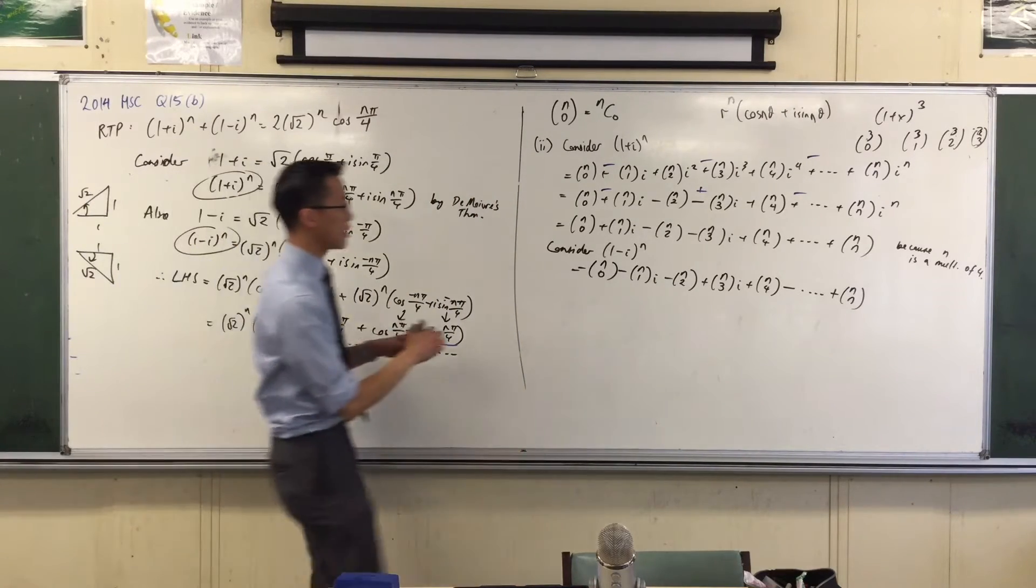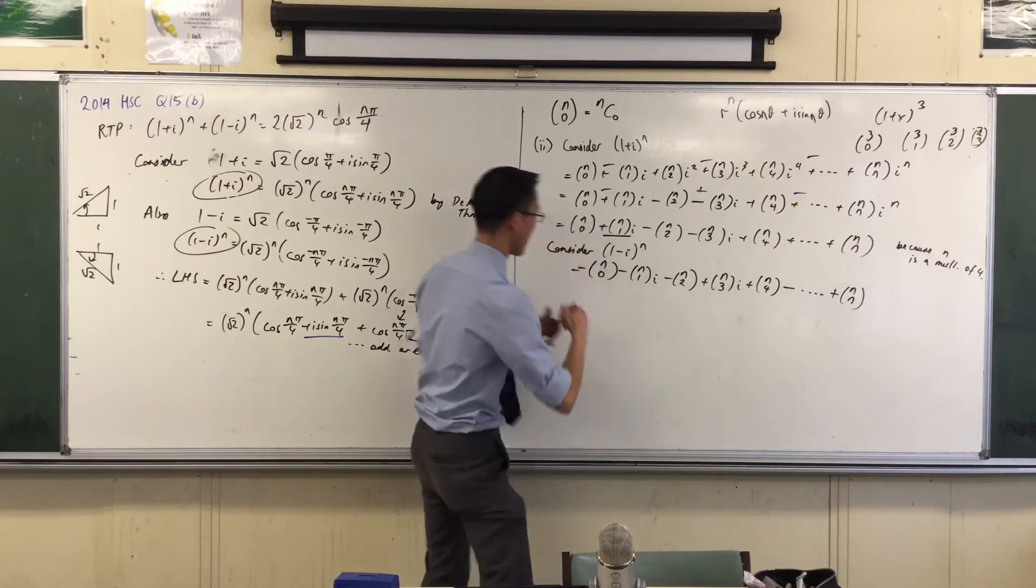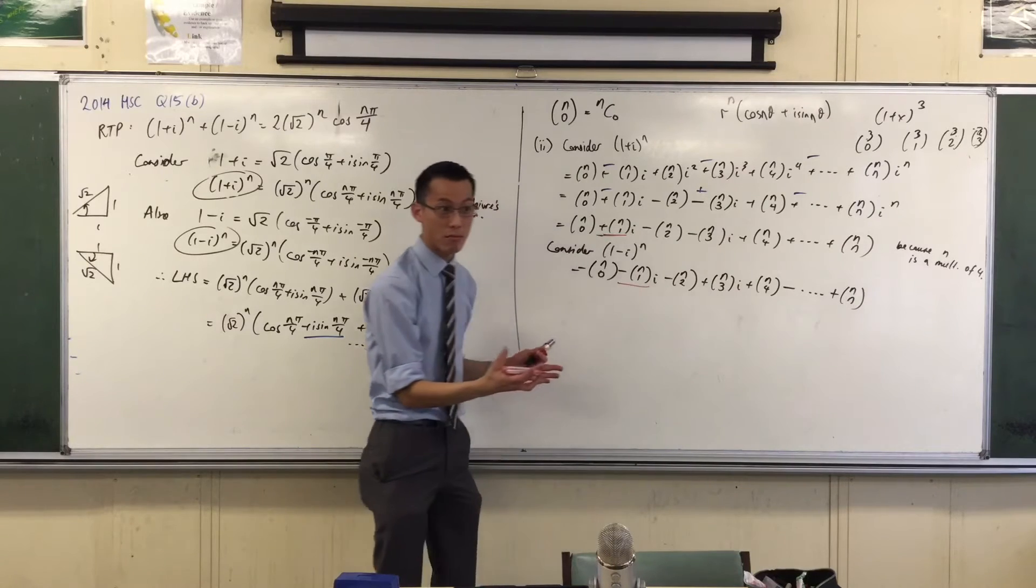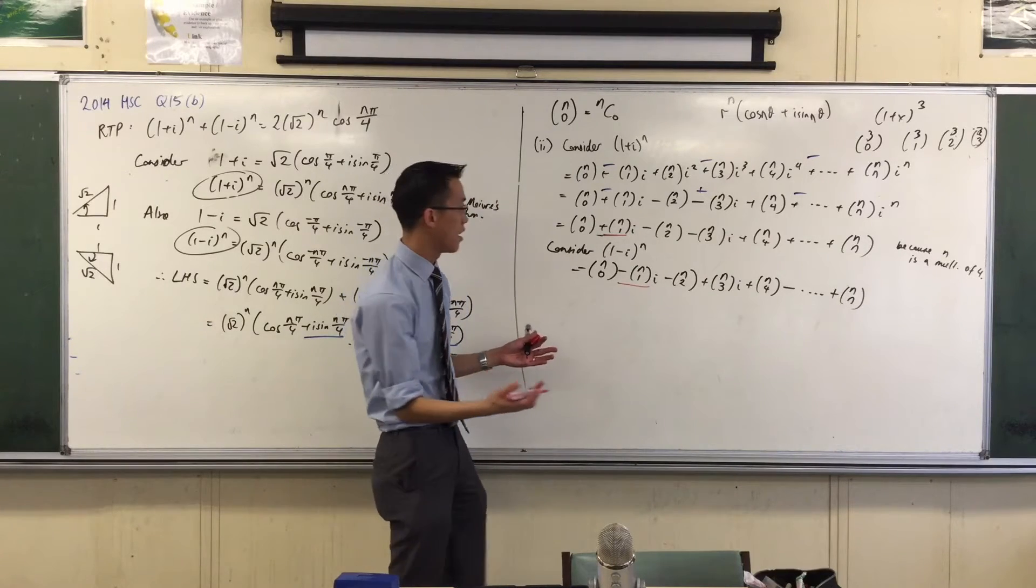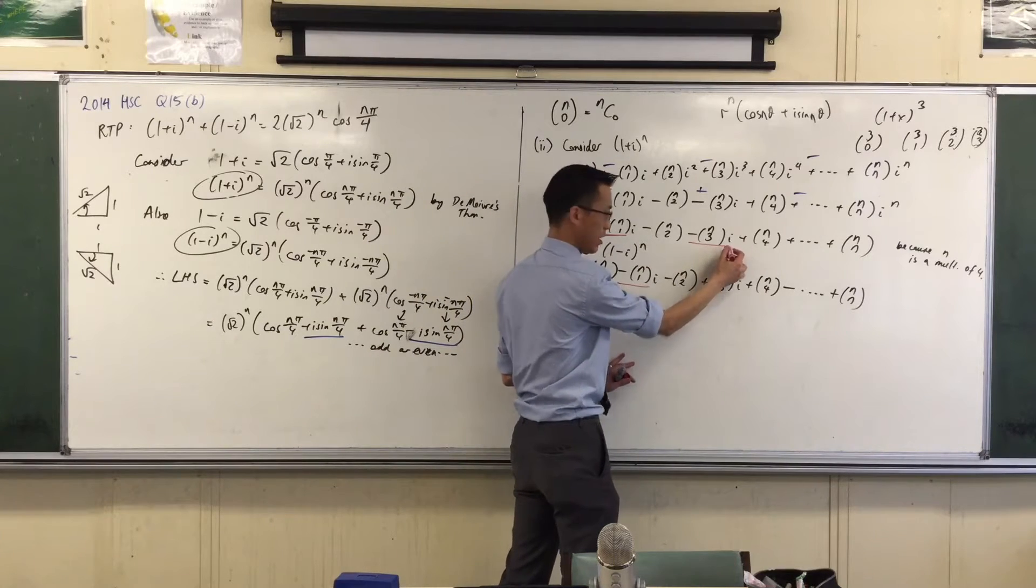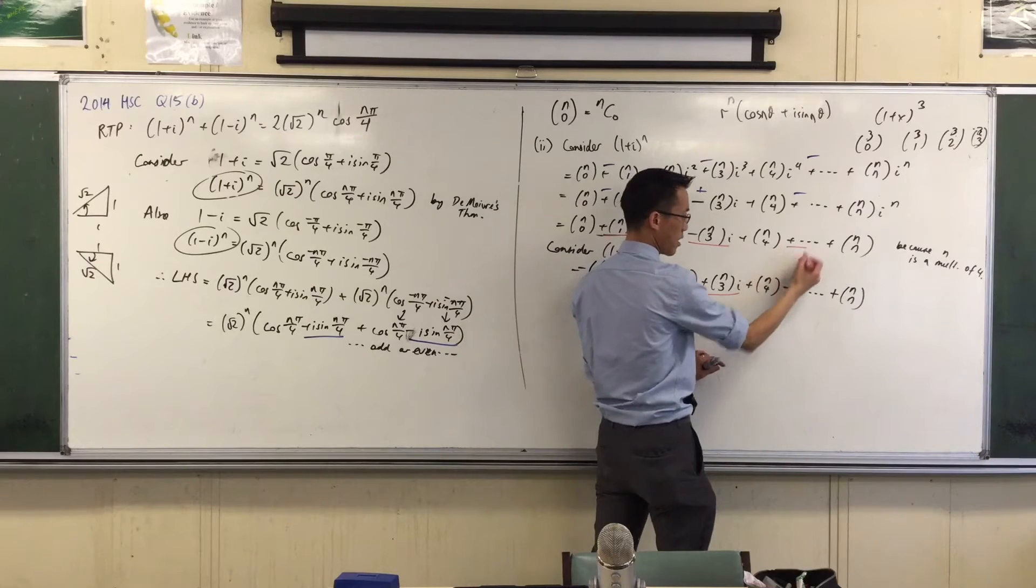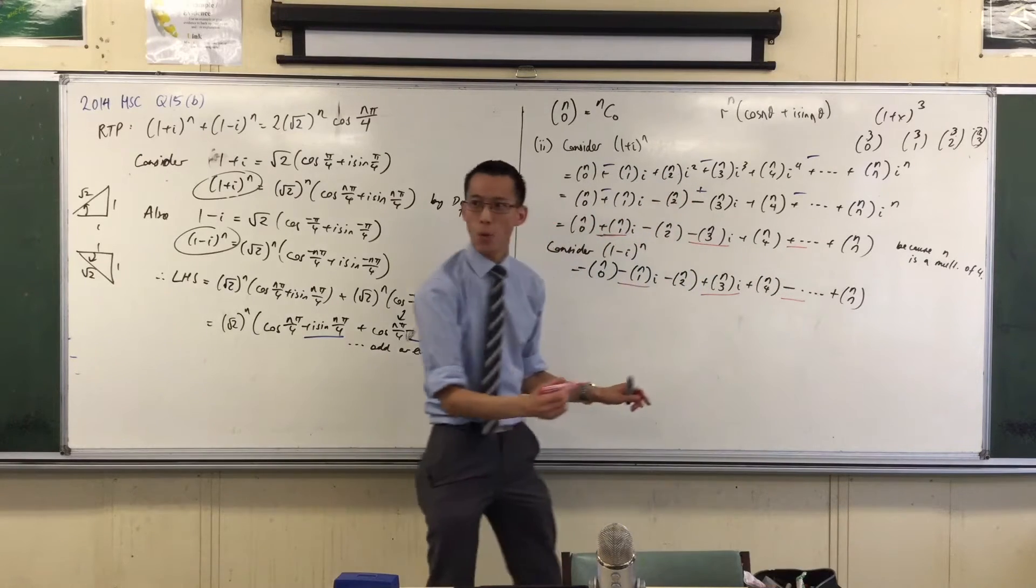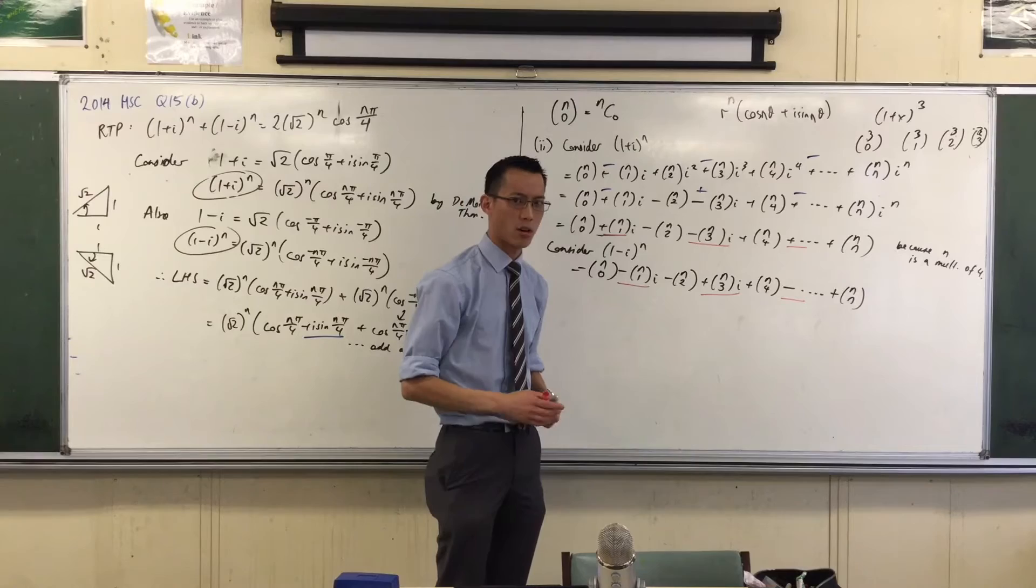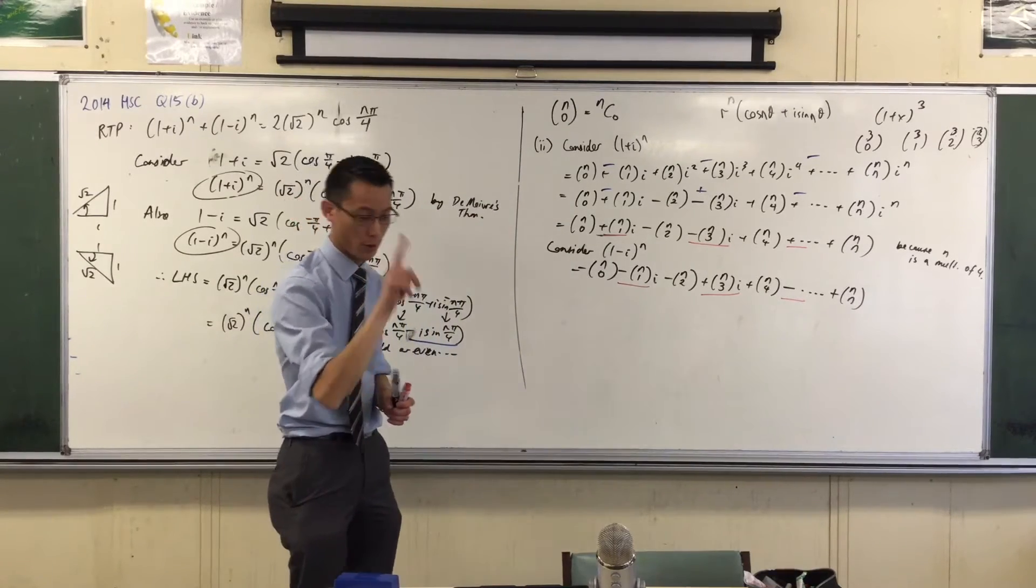They cancel. Look, see? See how this guy, oh, wrong color. This guy and this guy, when I add them, clearly going to cancel, right? Where's the next one? It's going to be this one, which is negative, and this one, which is plus. And then the next one will be the fifth one and the fifth one, right? What about the nth one? Is that going to be an even one or an odd one? It's even because n is a multiple of 4. Good.